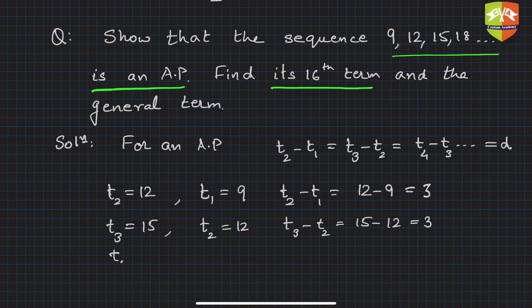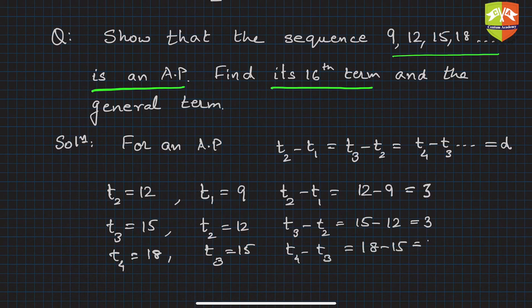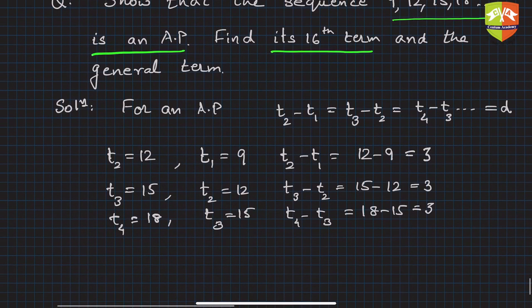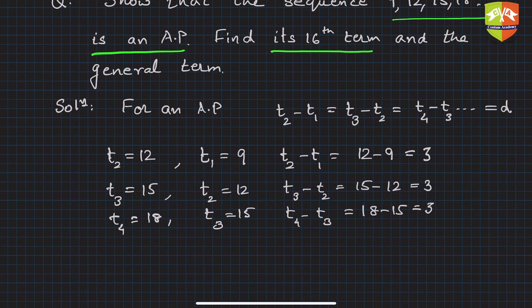Similarly, t4 is 18 and t3 is given to be equal to 15, so hence t4 minus t3 is equal to 18 minus 15, which is equal to 3.